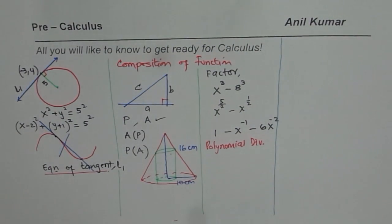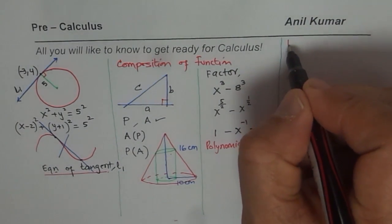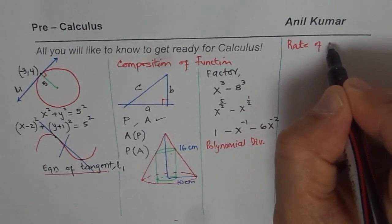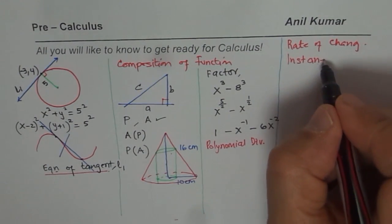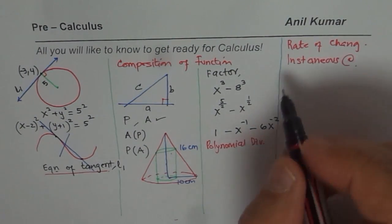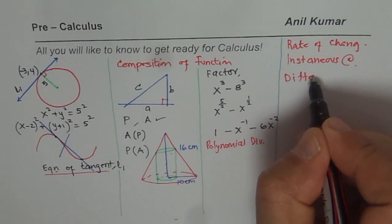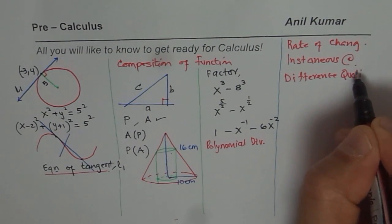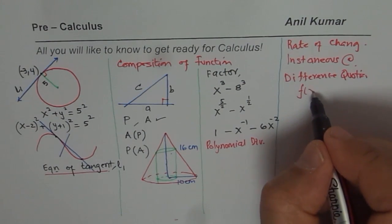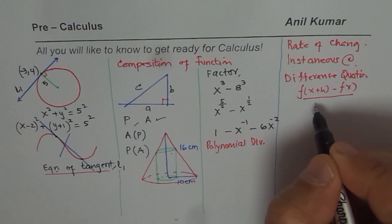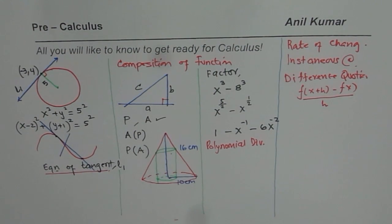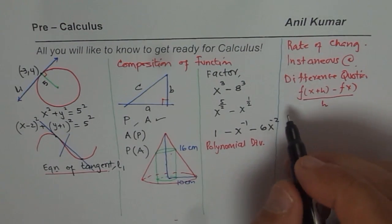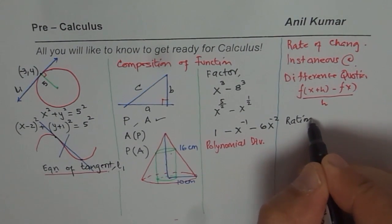Now we said initially that rate of change is most important. So word problems relating to rate of change, instantaneous rate of change - some of you have done. Now all this requires difference quotient method. You remember that - f of (x plus h) minus f of x divided by (x plus h) minus x which is just h. That difference quotient for different functions you should do that. That is very critical.